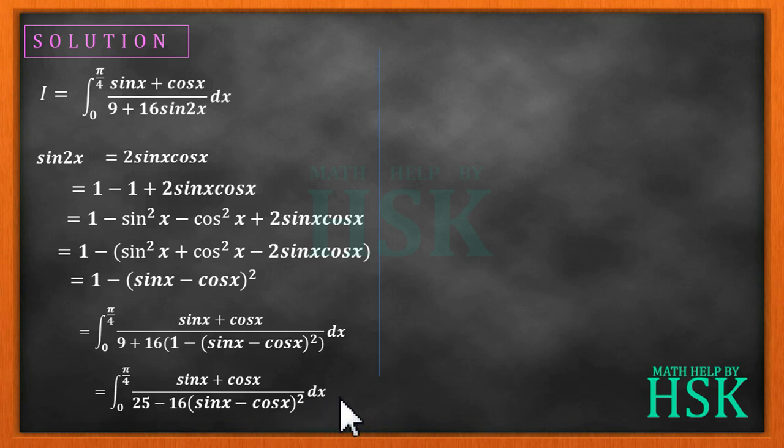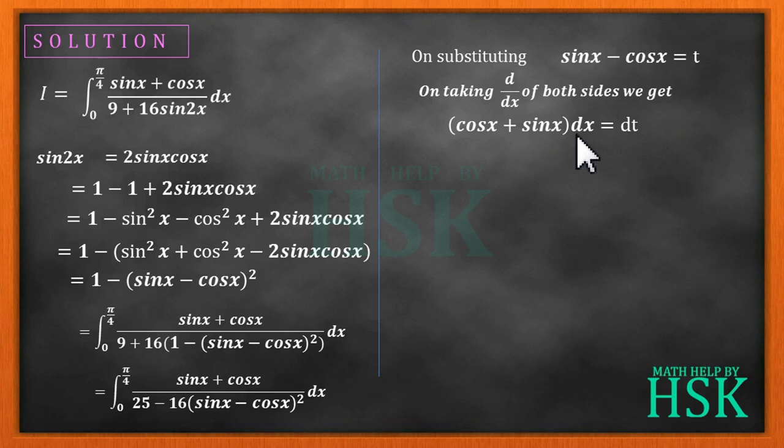We substitute sin x minus cos x is equal to t. On differentiation of both sides with respect to x we get cos x plus sin x dx equal to dt.